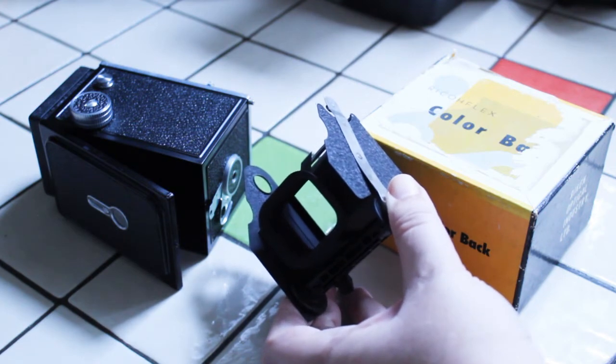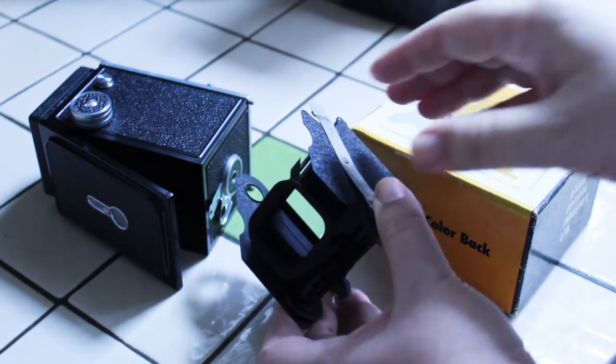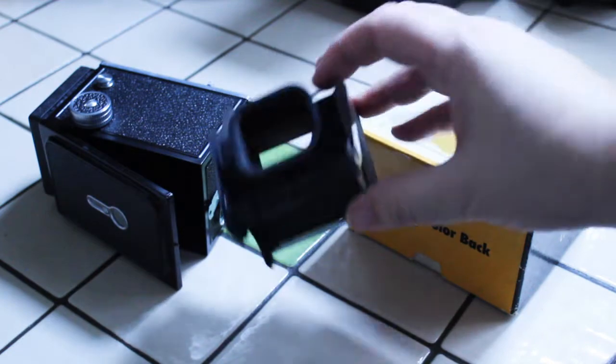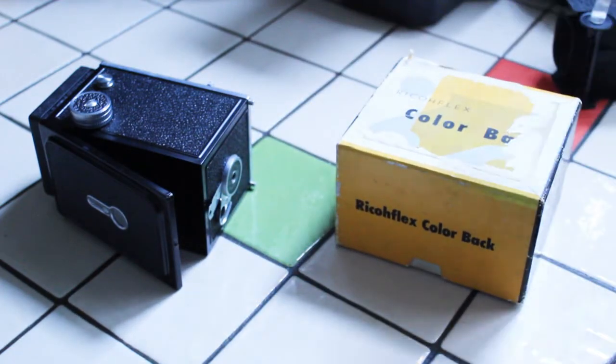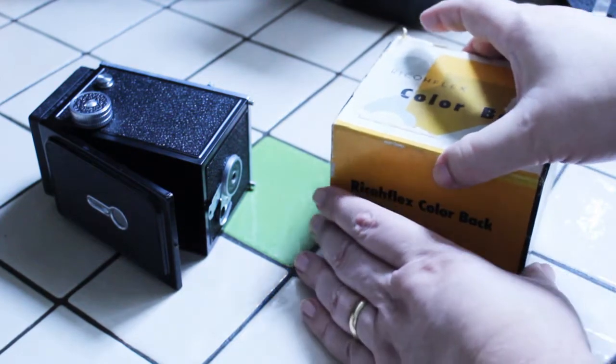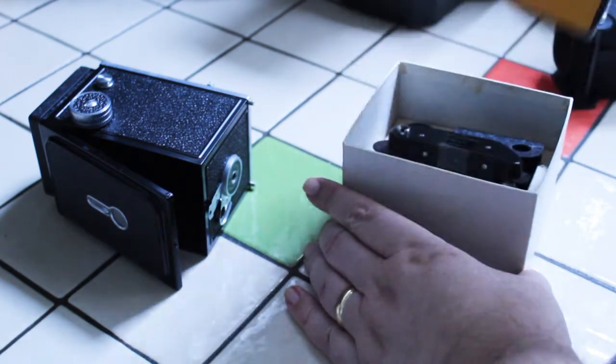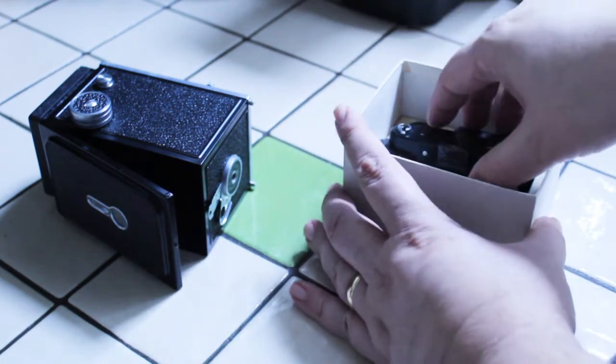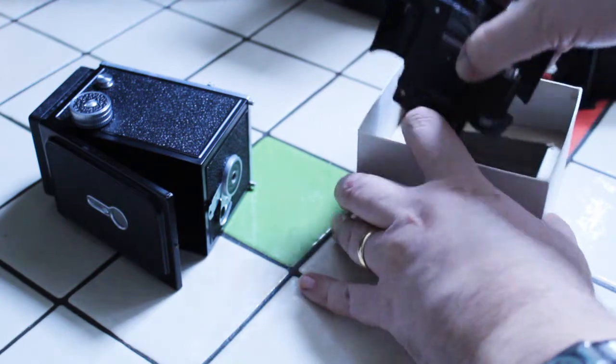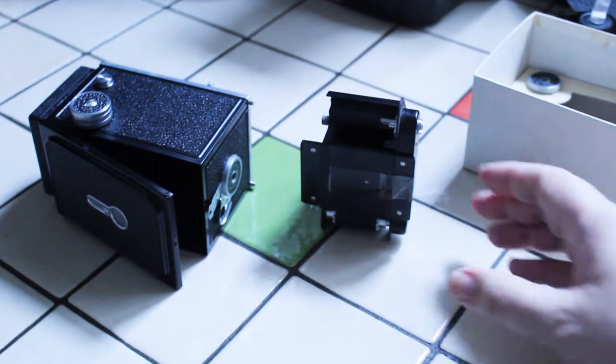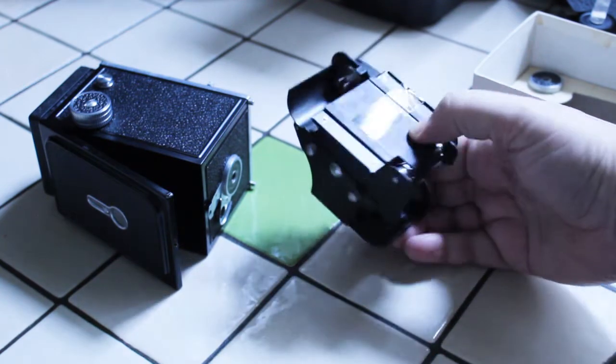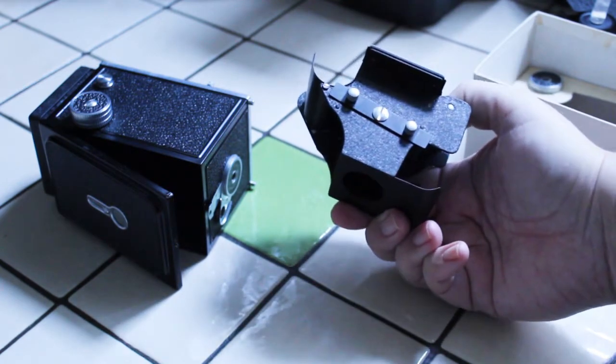Then when you were done taking your photos, you would take out that spool of film and take it to someone to be developed and processed. Now I'm going to take this and put it away and show you this accessory called the color back. And again, this was intended so that you'd be able to put 35 millimeter spools in the Ricoflex camera, and that's basically what it looks like.